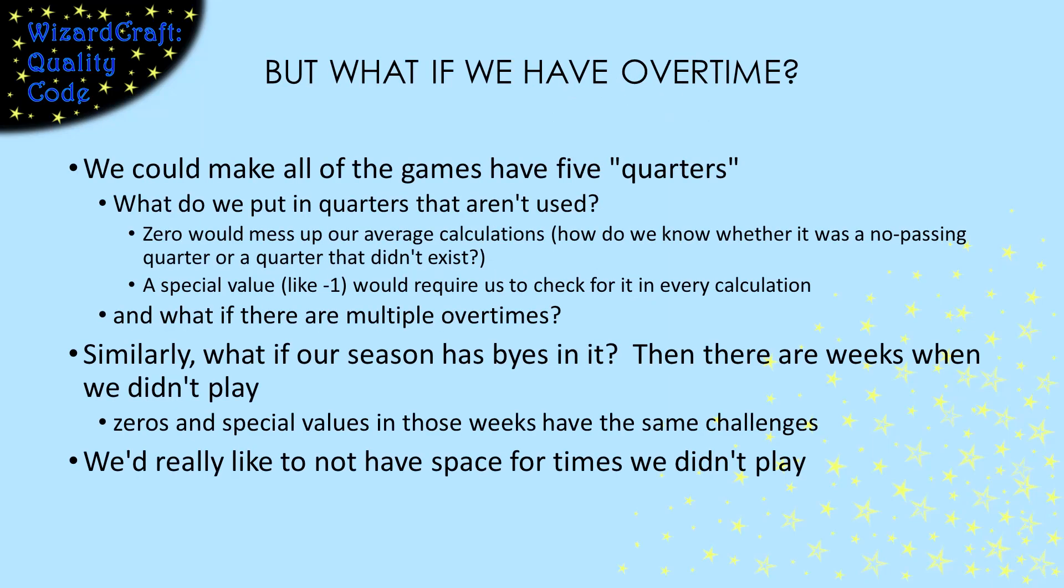In the video on rectangular arrays, I used the example of passing statistics for football teams. Our rectangular array had one row for each game in a season and one column for each quarter. But that broke down when we added the idea of overtimes and byes. With those, not every game has four quarters. To handle that, we're going to need jagged arrays.